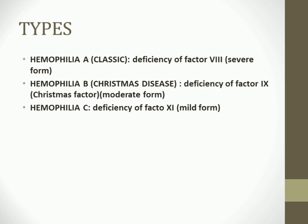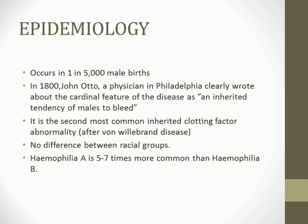Hemophilia B is called Christmas disease; it is due to deficiency of Factor 9, also called the Christmas factor, and is the moderate form. Hemophilia C is the rare and mild form, mainly due to deficiency of Factor 11. Epidemiologically, it occurs in one in five thousand males.